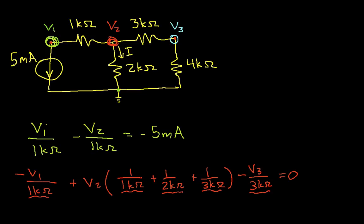Let's look at node 3. For node 3, I'll have minus v2 over 3k ohms plus v3 times 1 over 3k ohm plus 1 over 4k ohm. And this is equal to 0.